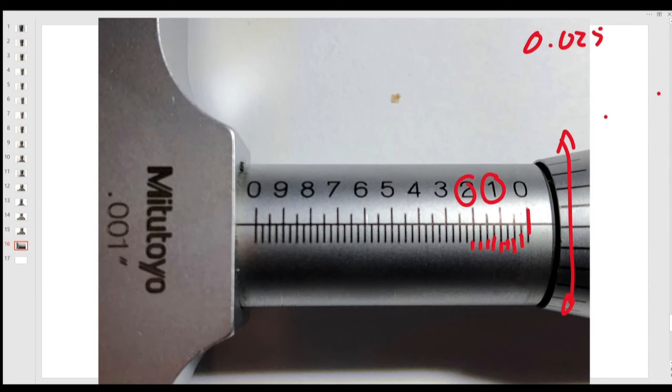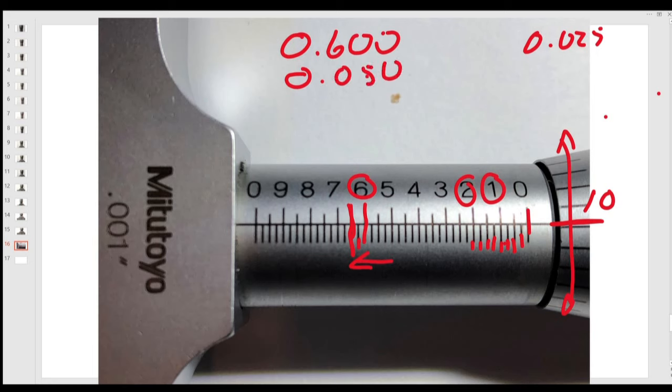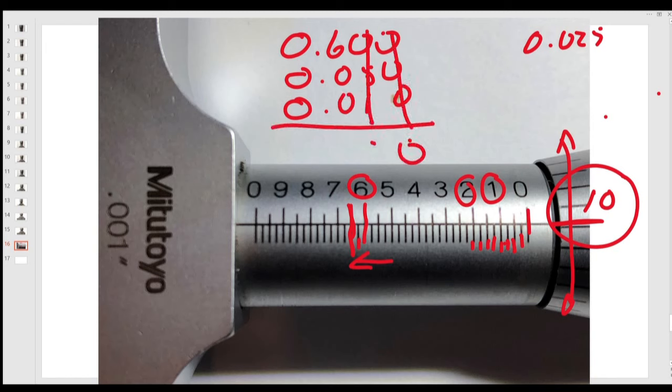Let's pretend that our thimble is sitting at 10. The number 10 on the thimble is lined up perfectly with this line. And we're going to say that we are right about here. So instead of going 25, 50, 75, we're going to say we're 600 because we're beyond this line here. So we're going to say 600,000 which is 0.600. Then we're going to say this number here is going to be 25. This number here is going to be 50, 0.050, plus our 10, 0.010. So 0.660 thou if this was to this point here.